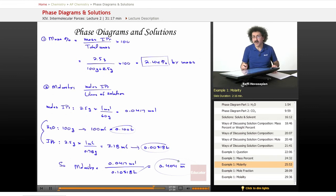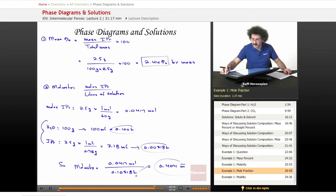That means for every liter of solution, it contains 0.404 moles of that isopropanol.